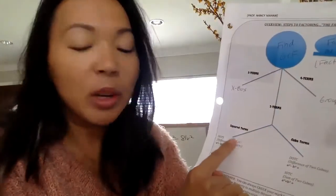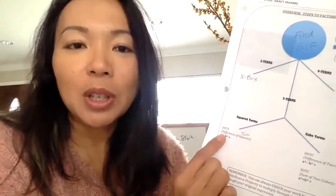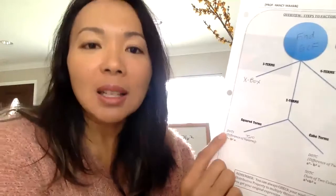Hi everyone. We're going to start looking at what to do when there are two terms. Looking at the worksheet, if you have two terms, we're going to use something called square terms and key terms. DOTS is an acronym for Difference of Two Squares — make sure you write the word 'two' in. So DOTS is the Difference of Two Squares.